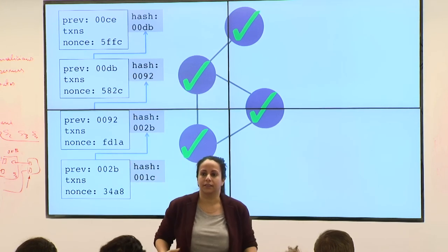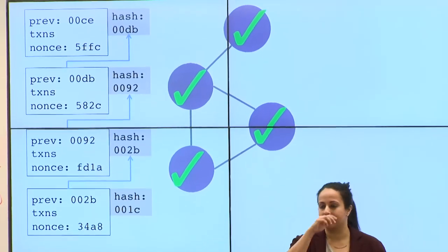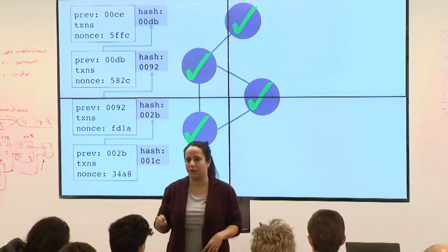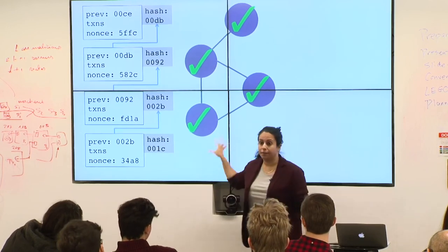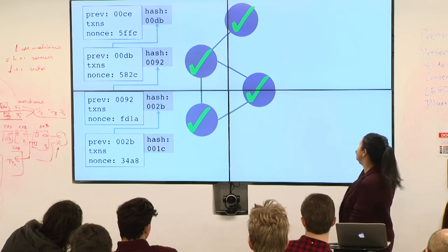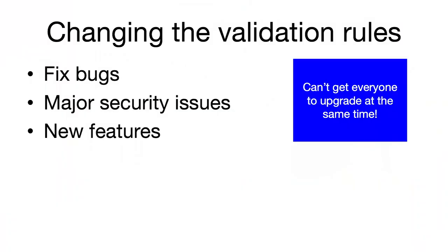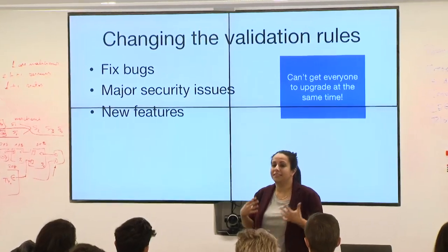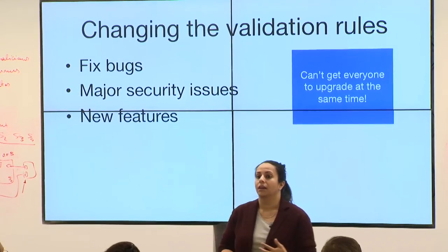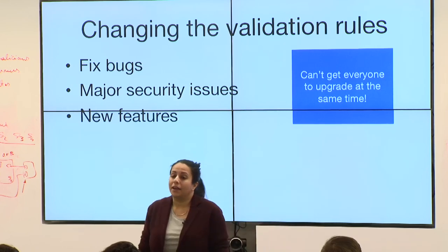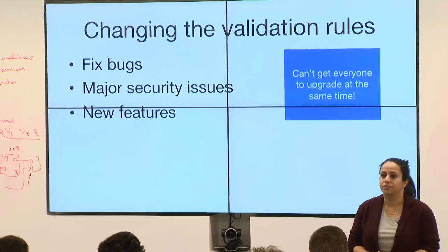Sometimes we need to change the validation rules — we need to upgrade the software. Software is not a static thing; there will be bugs, security vulnerabilities, and we might want to add new features, so we're going to want to change the validation rules. It's pretty much inevitable. And yet, given the nature of the system, we can't upgrade every single node at the same time.